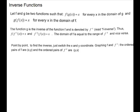Inverse functions. Let f and g be two functions such that f of g of x is equal to x for every x in the domain of g, and g of f of x is equal to x for every x in the domain of f. This is a formal definition of inverse functions.